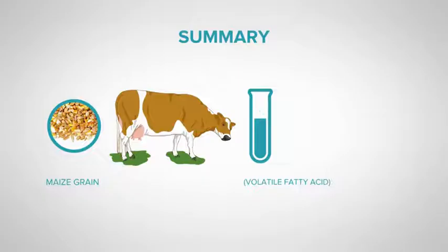If the feed was high in starch, such as maize grain, this results in increased propionate, and subsequently an increase in milk protein and milk volume.